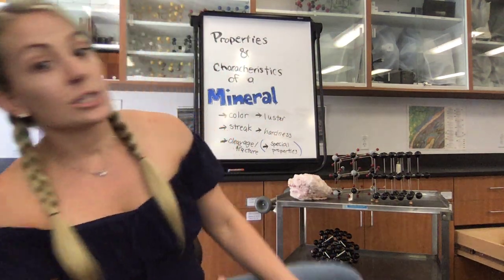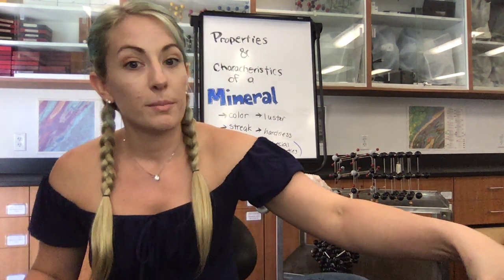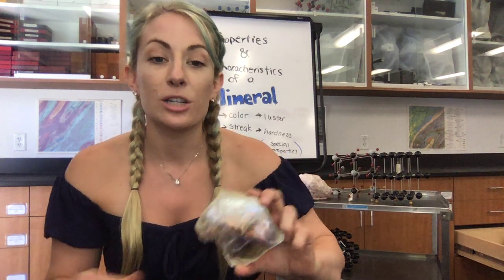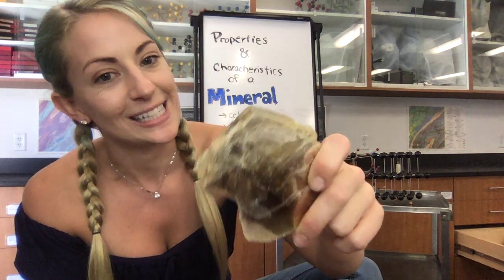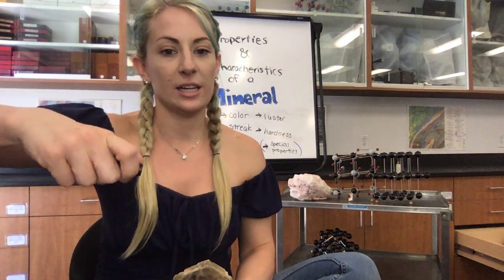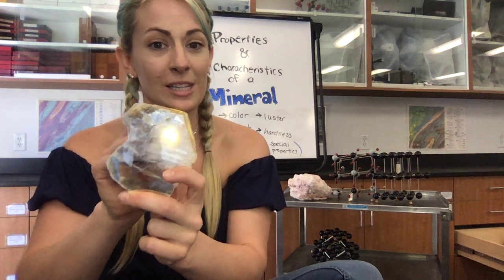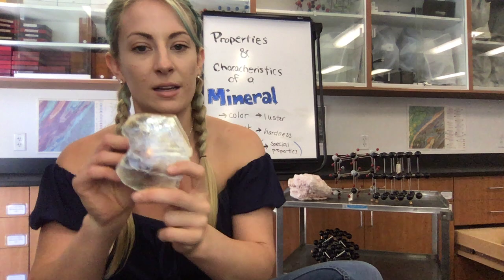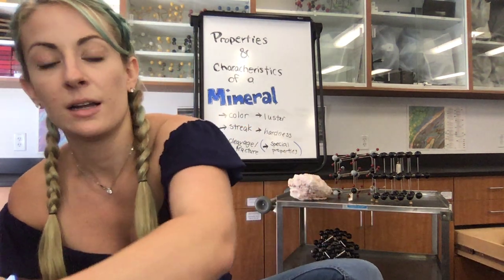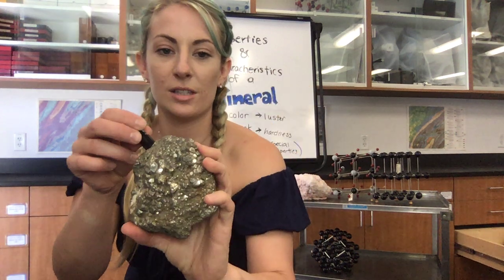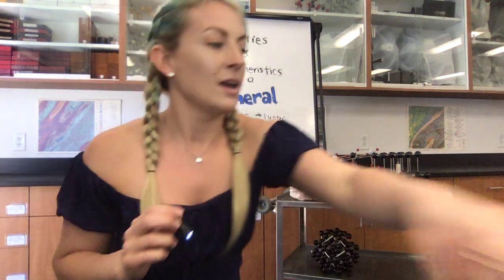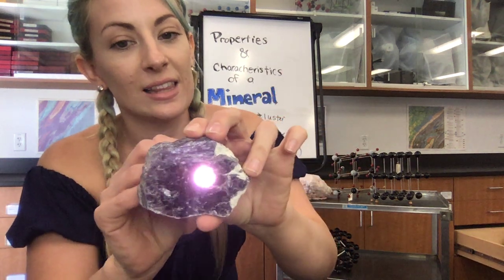The next characteristic is luster — how the light bounces off of a specimen. This muscovite might look metallic, but it's actually what's termed vitreous or glassy. To identify when something is glassy rather than metallic, look and see if light will pass through. You can see the light passes right through it just like glass. The pyrite is truly metallic — there is no light passing through. Our calcite is also vitreous; you can see the light passes through it beautifully. This lepidolite, another sheet silicate with one plane of cleavage, is also vitreous.